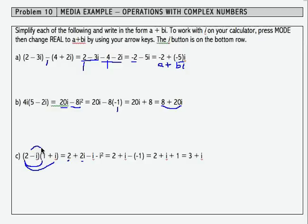The inside, negative i times 1, gives me negative i. And then the last, negative i times i, gives me negative i squared. Let's simplify carefully here. 2i minus i gives me an i.